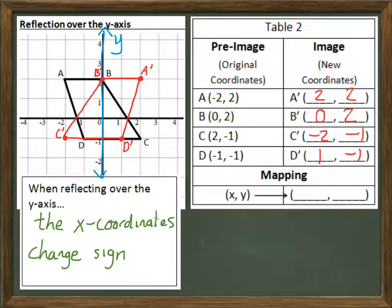Your coordinates are 2, 2, 0, 2, negative 2, negative 1, and 1, negative 1. Did what we predict happen?